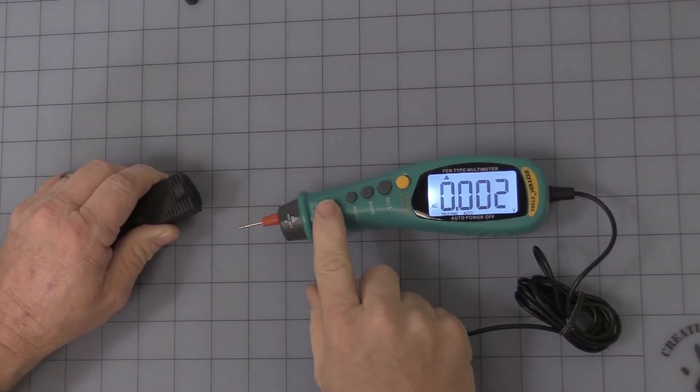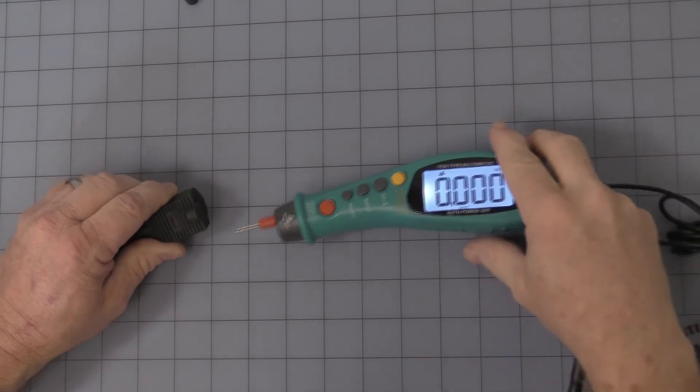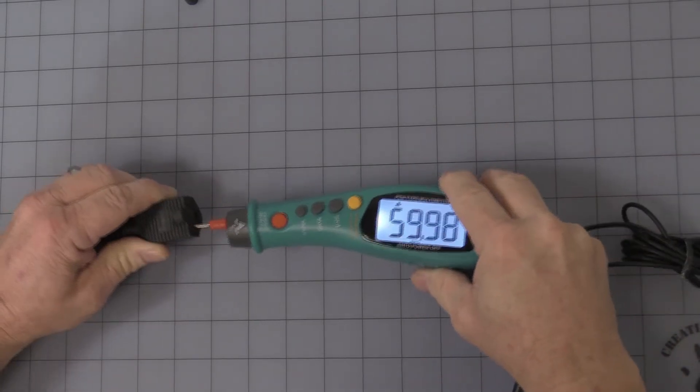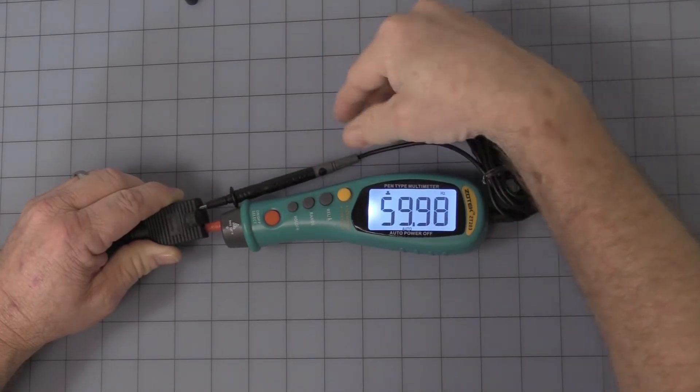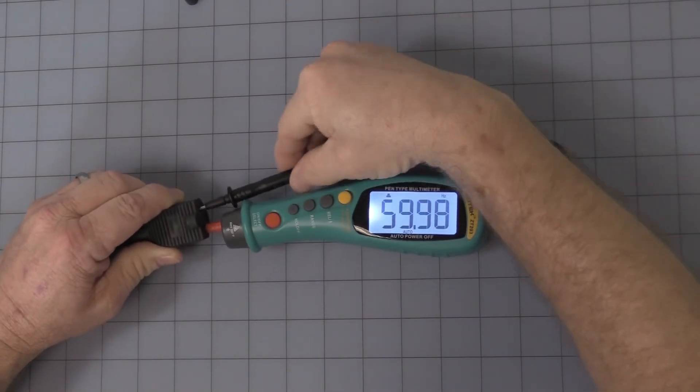And you press the red button again and you get to the next range of hertz. This is AC hertz, so press it and you'll see it's, make contact, 59.9.